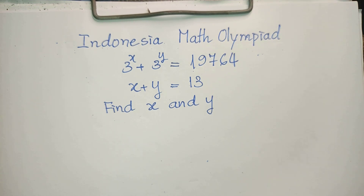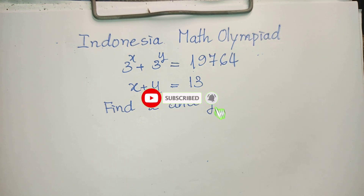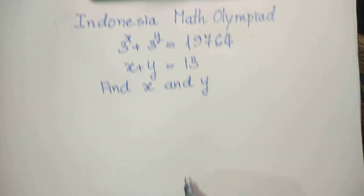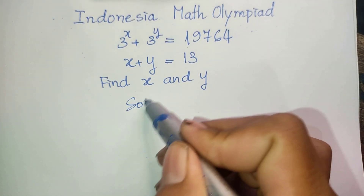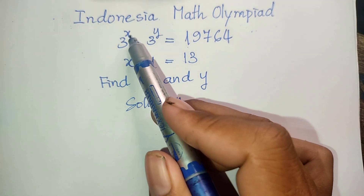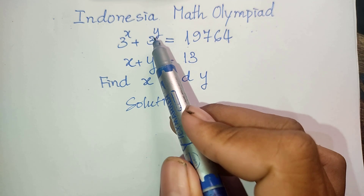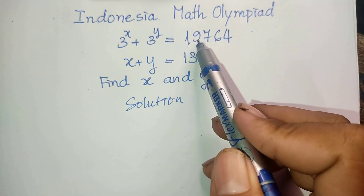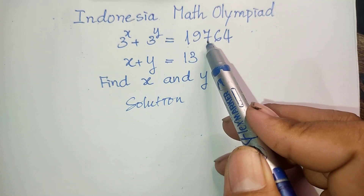Please come back to watch my video from beginning to the end, and before we go to the solution, please don't forget to subscribe to my channel for more exciting videos. Now we go to the solution together. We have 3 to the power h plus 3 to the power y equals 19764.